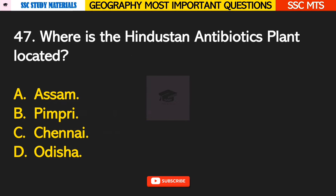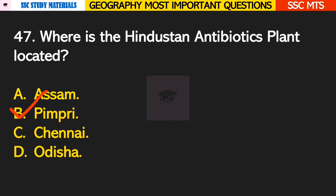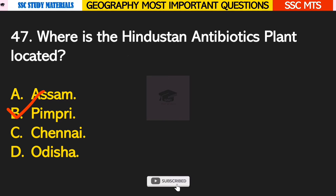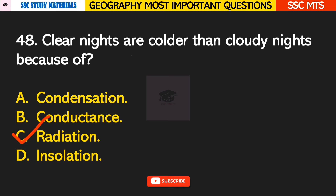Question number 47: where is the Hindustan Antibiotics Plant located? Answer B — Pimpri, which is in Pune. Question number 48: clear nights are colder than cloudy nights because of? Answer C — it is because of radiation.